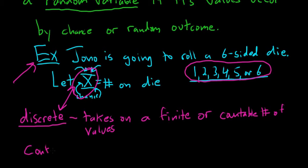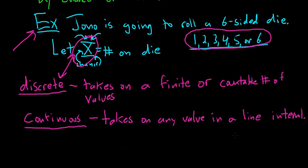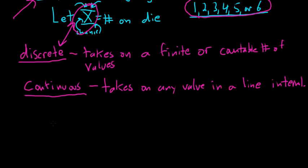A continuous random variable takes on an uncountable number of values, so you can't count the values. Another way of saying that is that it takes on any value in a line interval. So it could be a decimal.